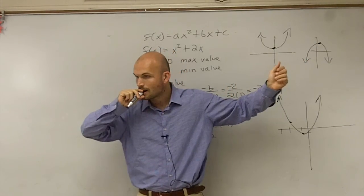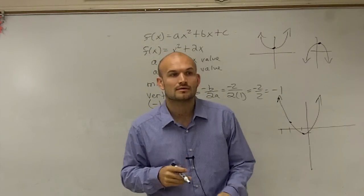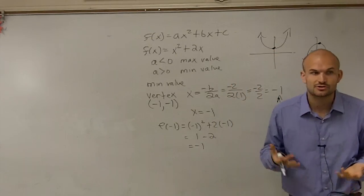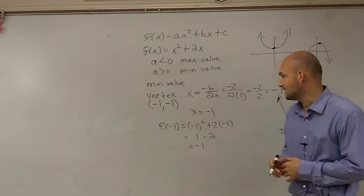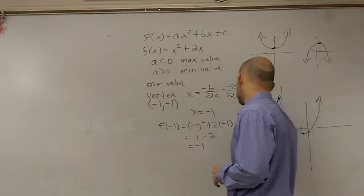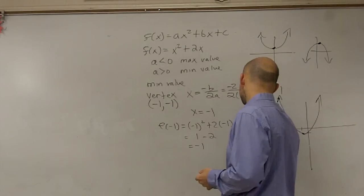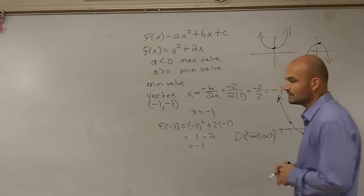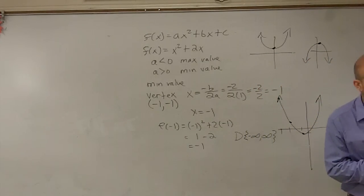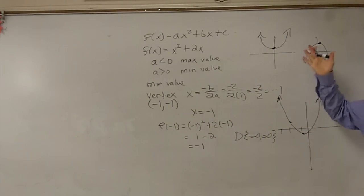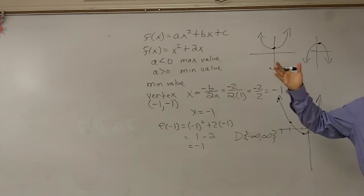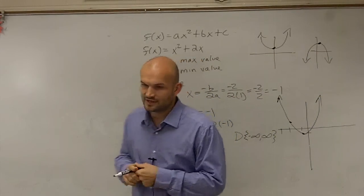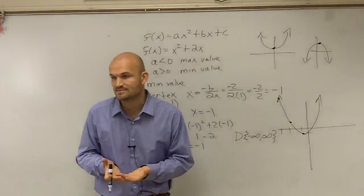Yes? So what if the domain always be negative infinity to infinity? For, yes, for your quadratics, your domain is always going to be negative infinity to infinity. Unless we have some different constraints. But we can just write our domain as from negative infinity to infinity. Because all quadratics, they're always going to keep on expanding left and right. So, yes, your domain is always going to be negative infinity to infinity. Or what we might sometimes say is all real numbers.